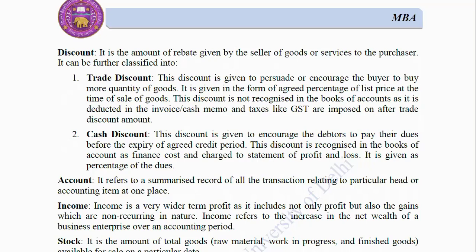Discount: It is the amount of rebate given by the seller of goods or services to the purchaser. It can be classified into: (1) Trade Discount — given to encourage buyers to purchase more quantity of goods; given as an agreed percentage of list price at the time of sale. This discount is not recognized in the books of accounts as it is deducted in the invoice or cash memo, and taxes like GST are imposed after trade discount. (2) Cash Discount — given to encourage debtors to pay their dues before the expiry of the agreed credit period. This discount is recognized in the books of accounts as finance cost and charged to statement of profit and loss.